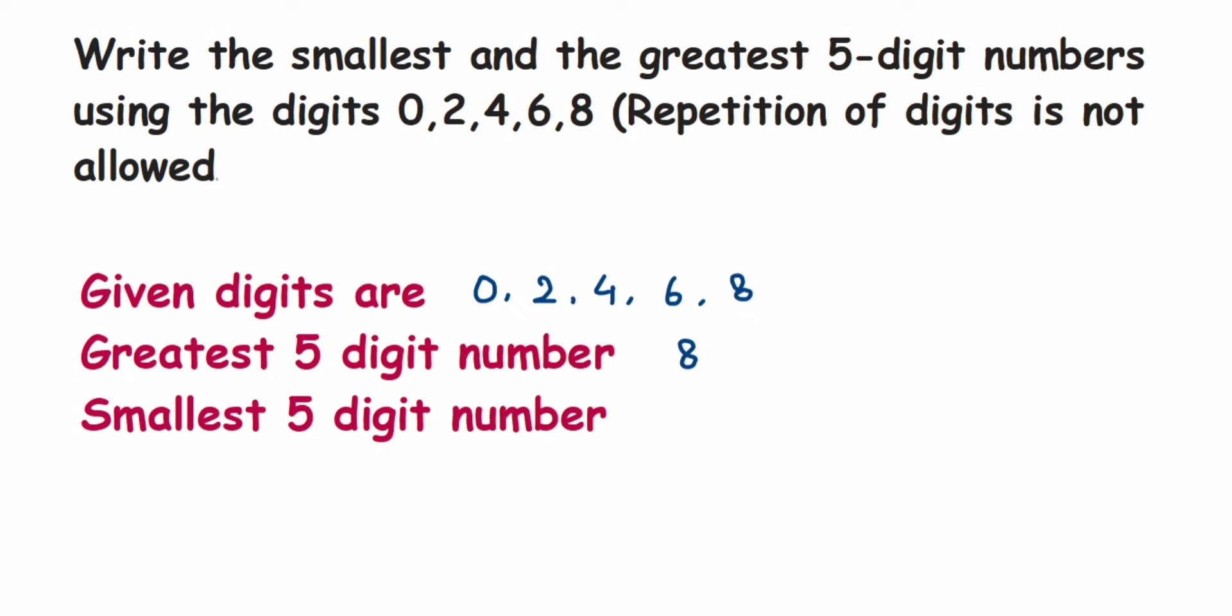The next is 4, and the next is 2, and the next is 0. So the number here will become 86,420. So whenever you're writing the greatest digit, you have to just look at the greatest digit, and then it's like descending order you have to write down, that's it.